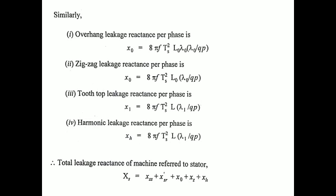The total leakage reactance of the machine is calculated by summing all five components: Xs = Xss + Xsr' + X₀ + Xz + Xh. Here Xss is stator slot reactance, Xsr' is rotor slot reactance referred to stator, X₀ is overhanging leakage reactance, Xz is zigzag leakage, and Xh is harmonic leakage. By calculating all these, we can find the total leakage reactance of the machine referred to the stator side.